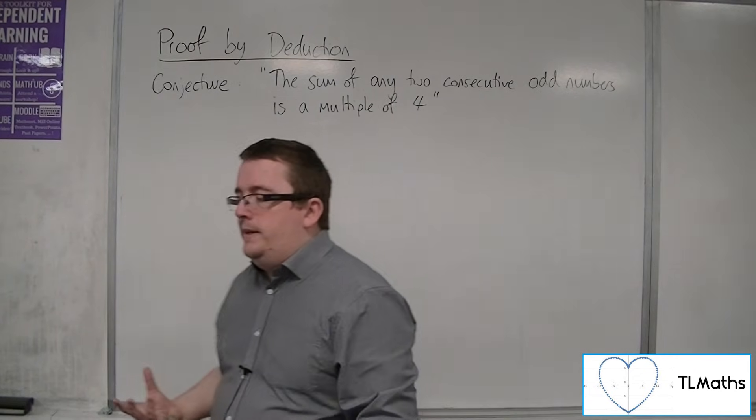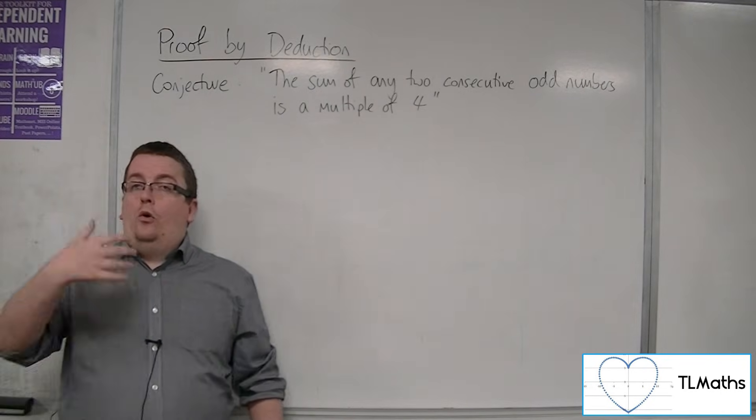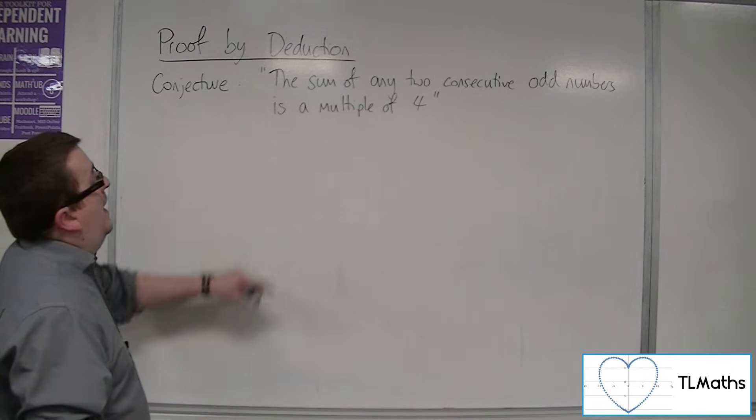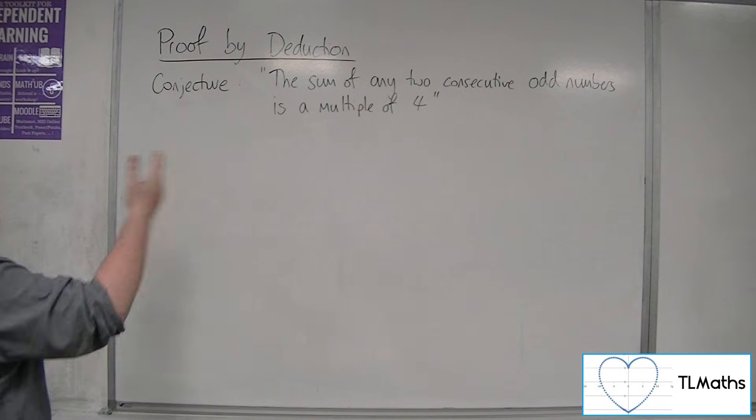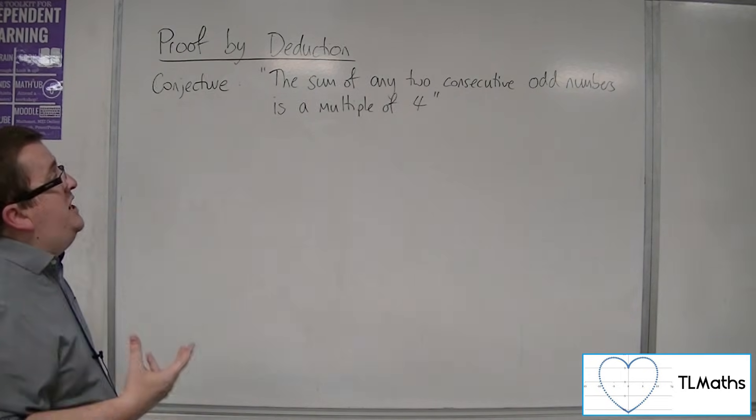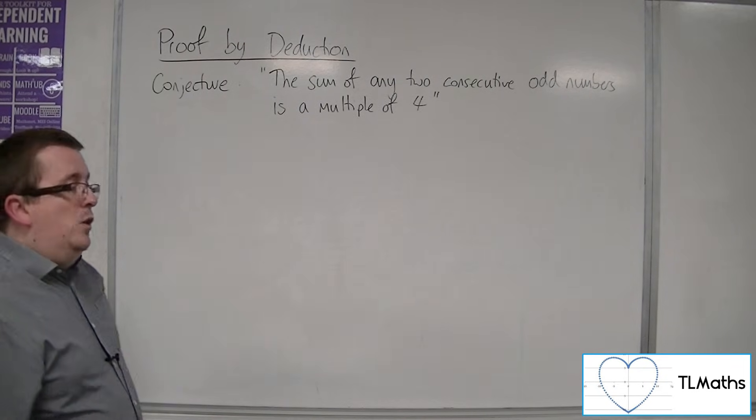We are going to formulate a logical argument, be it algebraically or just through words, to show that the conjecture must be true. Here is our conjecture for this example: the sum of any two consecutive odd numbers is a multiple of four.